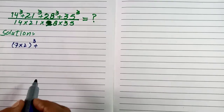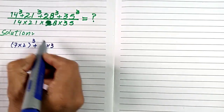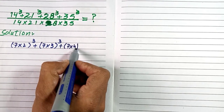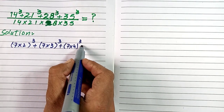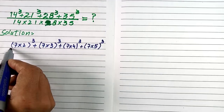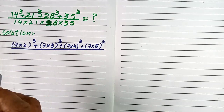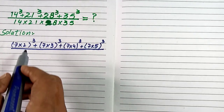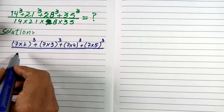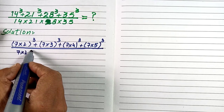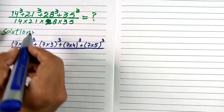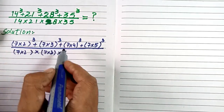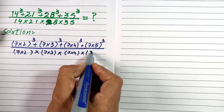In the place of 21 we can write 7 × 3, which is equivalent to 21, with power 3. And 28 is equivalent to 7 × 4 with power 3, and 35 is equivalent to 7 × 5 with power 3. In the denominator there is a multiplication sign, so in the place of 14 we write 7 × 2, then 21 becomes 7 × 3, 28 becomes 7 × 4, and 35 becomes 7 × 5.